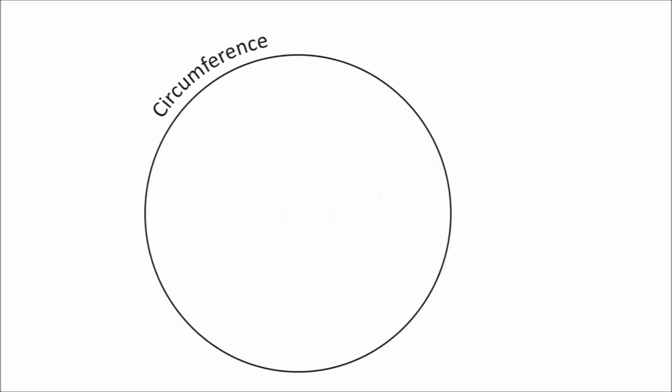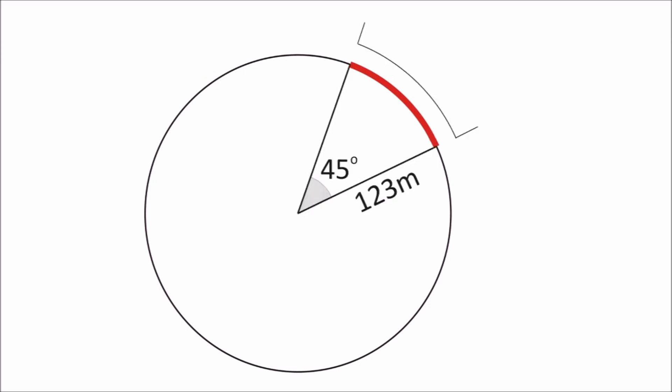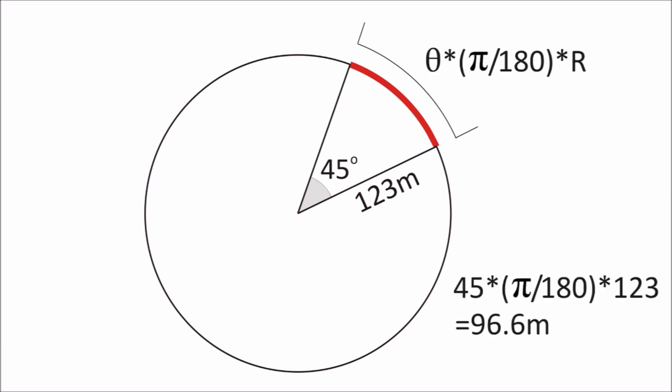Hopefully you remember from school that a circle has a circumference, and that a section of the circumference is called an arc. If you know the distance from the center of the circle to the arc, and the angle between the two ends of the arc, you can calculate its length using a simple arc formula: angle × π ÷ 180 × radius. So in this case the arc would be 96.6 meters.